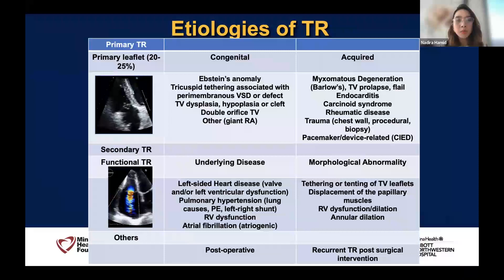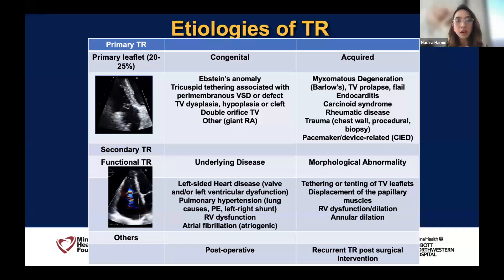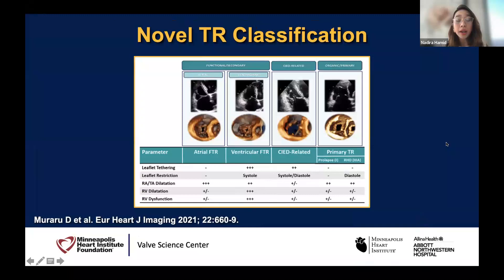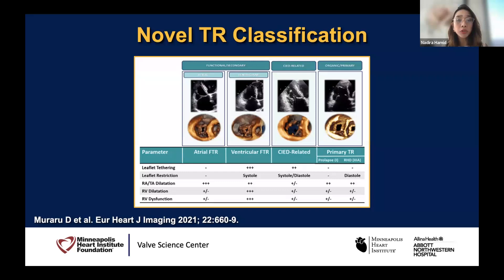We all know the etiologies of TR: primary, secondary, and the bulk being atrial functional TR that we see in women with atrial fibrillation for many years. The novel TR classification I think we should adopt more — and I use in my echo reports — is really defining whether it's atrial or ventricular functional tricuspid regurgitation, CIED-related, or organic/primary TR. Using this classification will be very helpful as to improved outcomes, which we're learning from pivotal trials like Triluminate and the late-breaking trial from EVO at TCT.